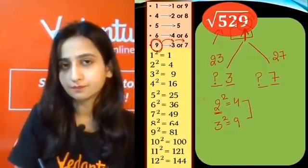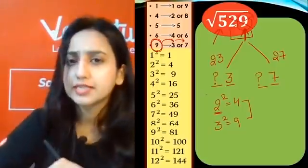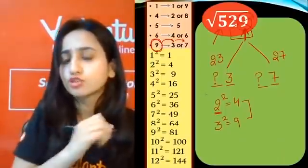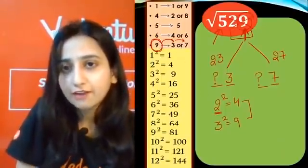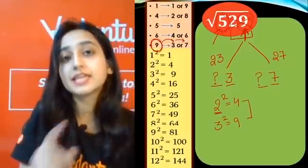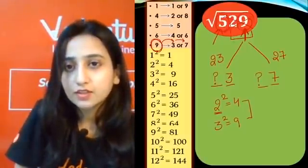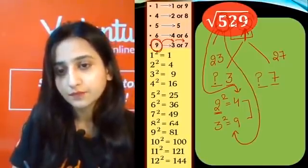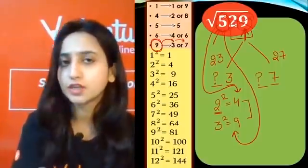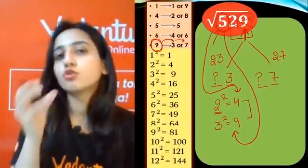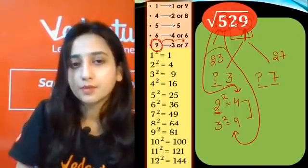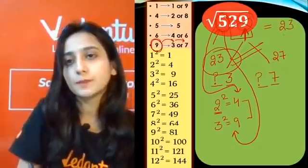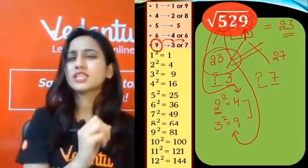The question is whether 23 or 27 is the answer. You just need to see whether 5 is closer to 4 or closer to 9. 5 is definitely closer to 4. Since 4 is the smaller number, we take the smaller tens digit, which is 2. So 23 is our answer. Very easy!